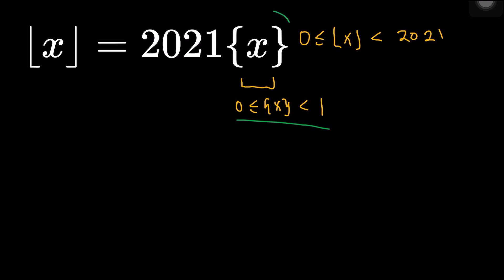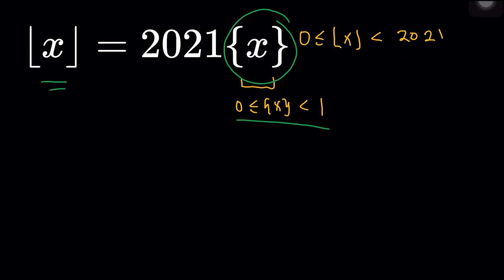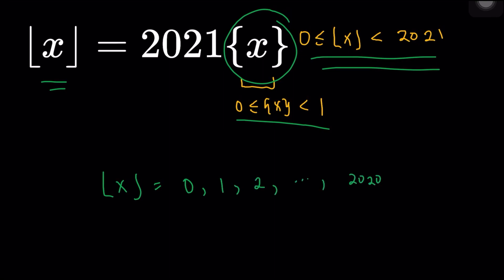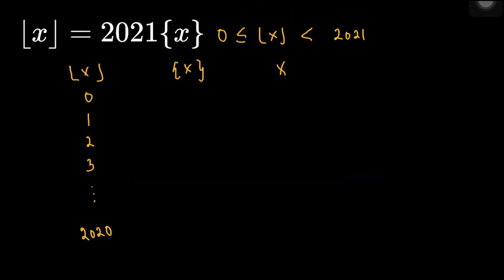With this condition — fractional part of x within this range — that tells me that the floor of x must be greater than or equal to 0 times 2021, which is 0, and less than 1 times 2021, which is 2021. So floor(x) must be an integer between 0 and 2020. I can write a table for floor(x) and the fractional part of x, and by adding these two I get x.